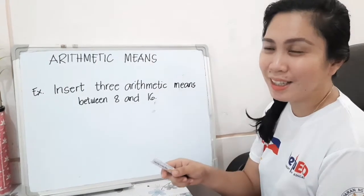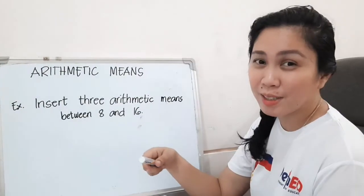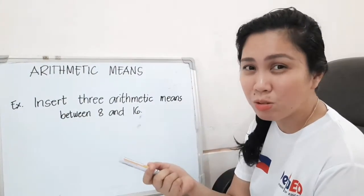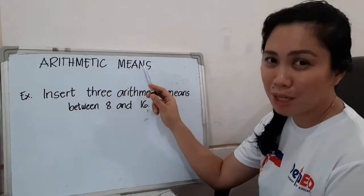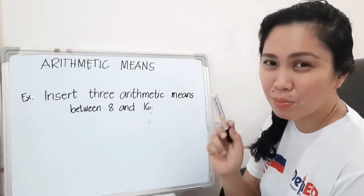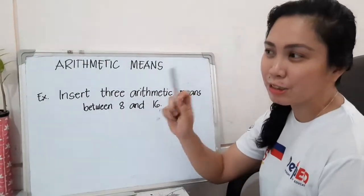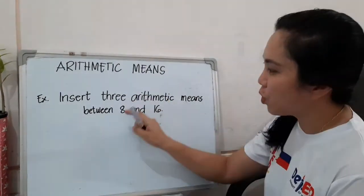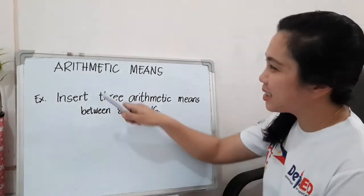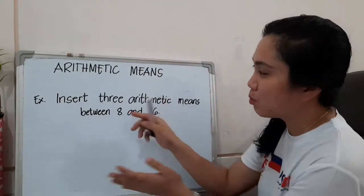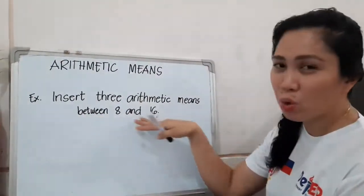Hello, once again. This is a continuation for our lesson in module 2, week 2 — it's all about arithmetic means. Arithmetic means are the terms inserted between the first and the last term.